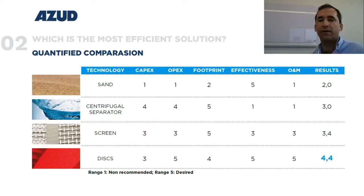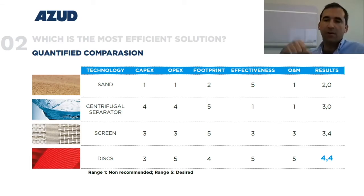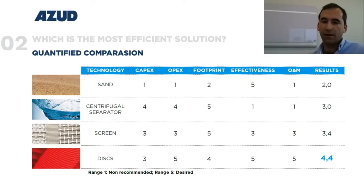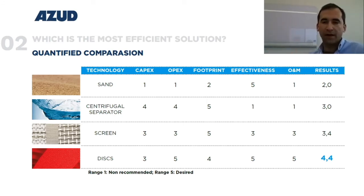During backflush, disc and media filters are the only ones that have an expandable media during cleaning. For example, in the disc filter during backflush, the discs separate and allow the trapped particles to be released much more easily than a screen. In the case of the media filter, the media can also expand during backflush, although it is much more difficult to find the equilibrium during backflush and to assure that the media settles back to the same position.